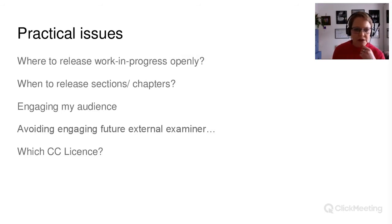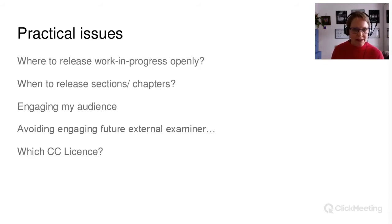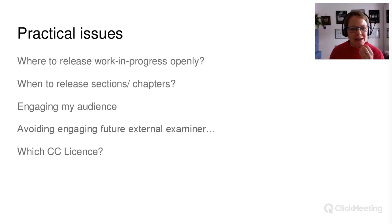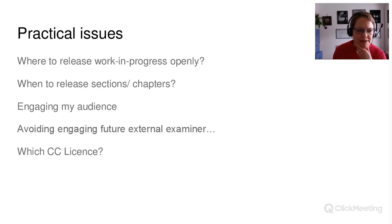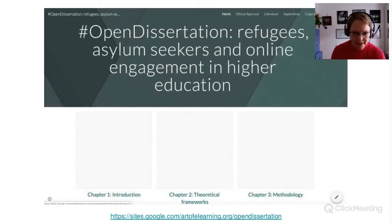Moving on to practical issues. Initially I went through a lot of different options about where to release my work in progress openly. I thought I could put it in my blog, but then each chapter would end up being interspersed with blog posts about other things. Then I thought it should go into Figshare, because lots of people were sharing open stuff there. I found that Zenodo is open source and completely focused on open sharing, so I thought Zenodo would be the place to go, but with my limited coding skills I couldn't find a way to make Zenodo really do what Google Sites is doing. So I came to Google Sites just as a more or less convenient way of doing it, which also enabled me to keep working in Google Docs as I have been doing.